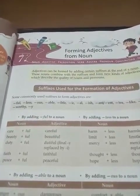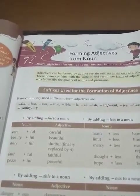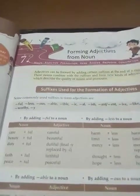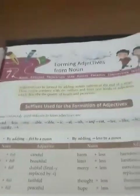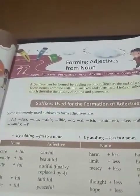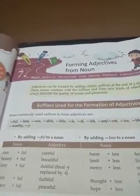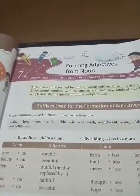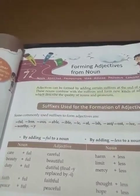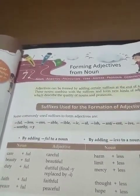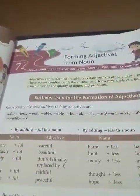Today I am going to tell you about adjectives which are formed from nouns. Adjectives can be formed by adding certain suffixes at the end of a noun. These nouns combine with the suffixes and form a new kind of adjective which describes the quality of a noun and pronoun.